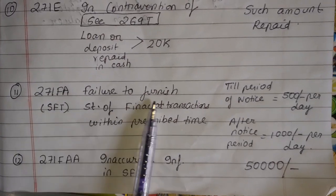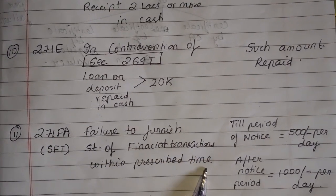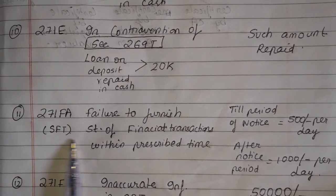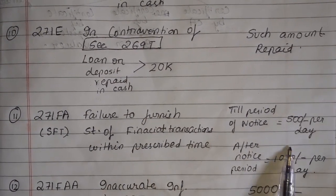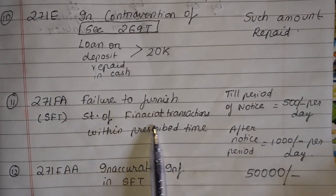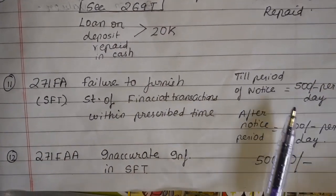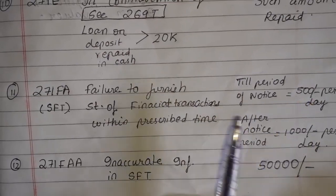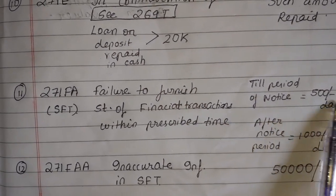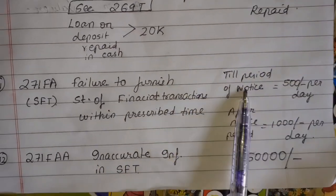Section 271FA: Failure to furnish a Statement of Financial Transactions (SFT) within the prescribed time. If you fail to submit the SFT by the deadline, the penalty is ₹500 per day for each day of default during the period of notice.